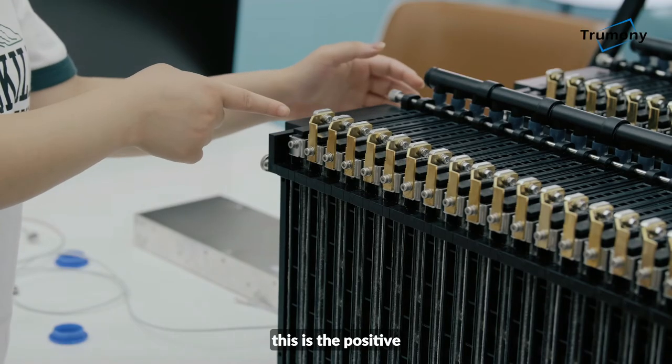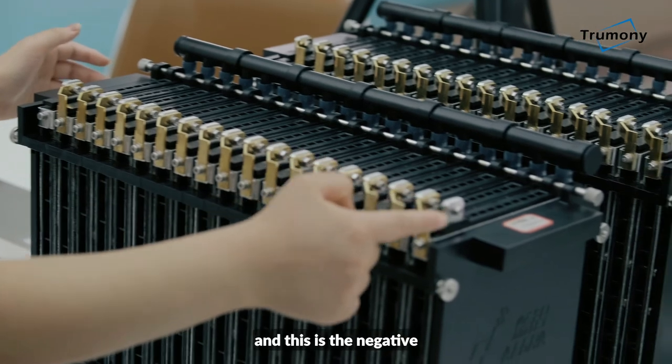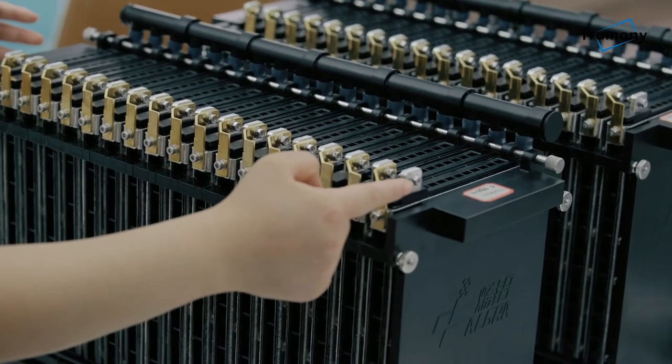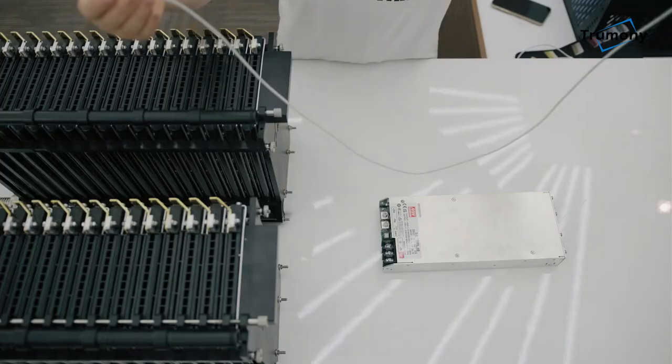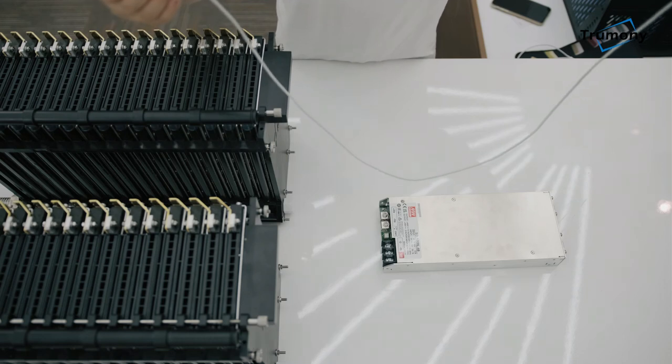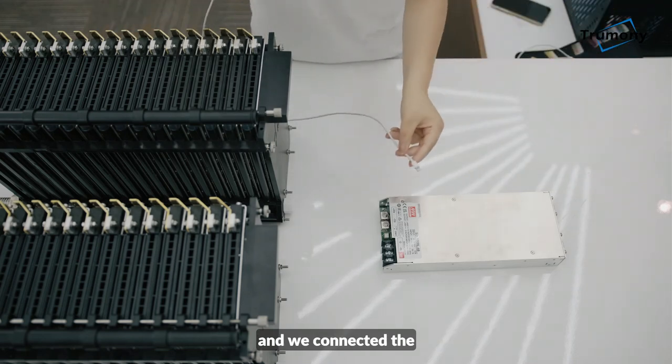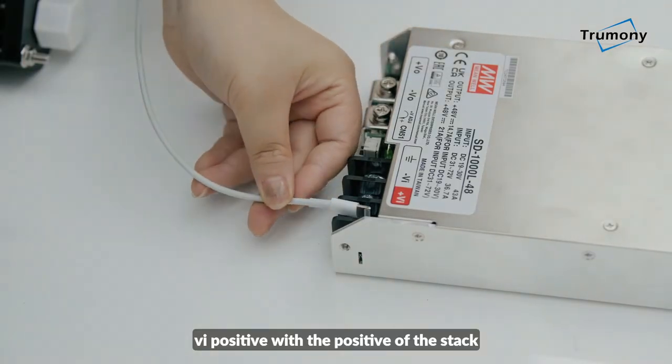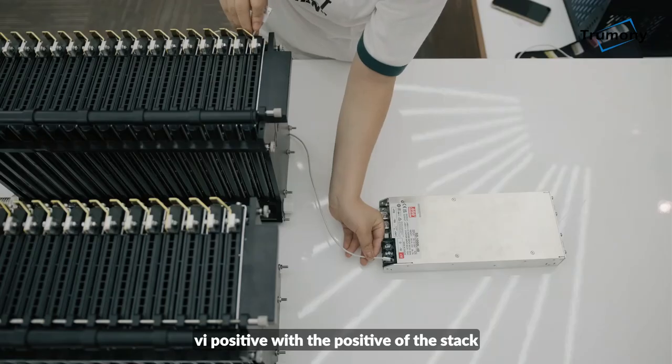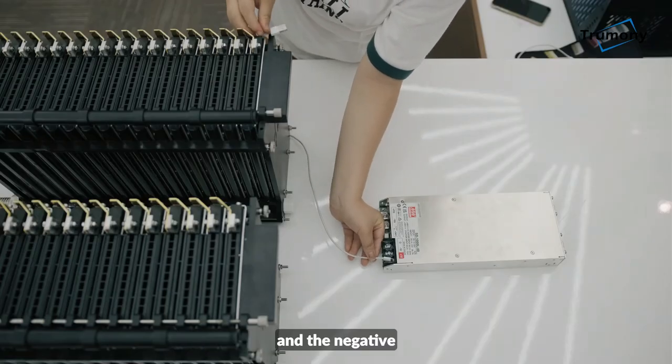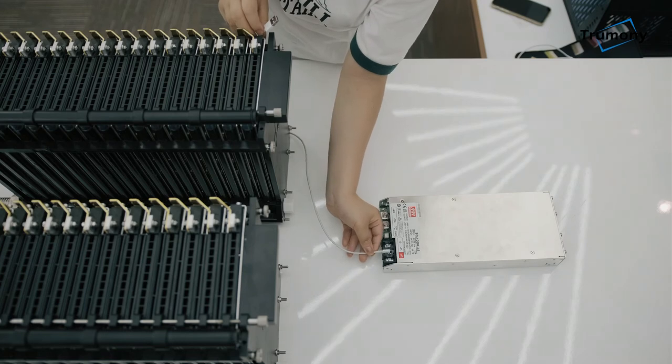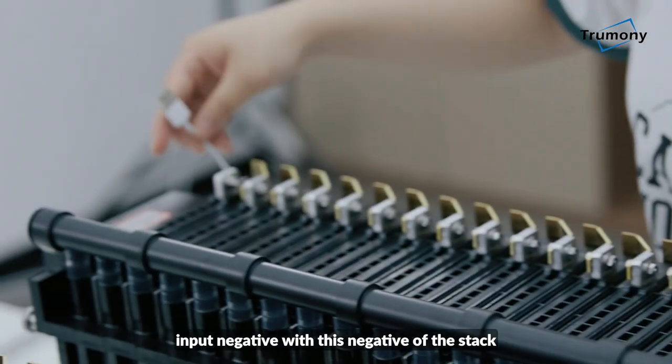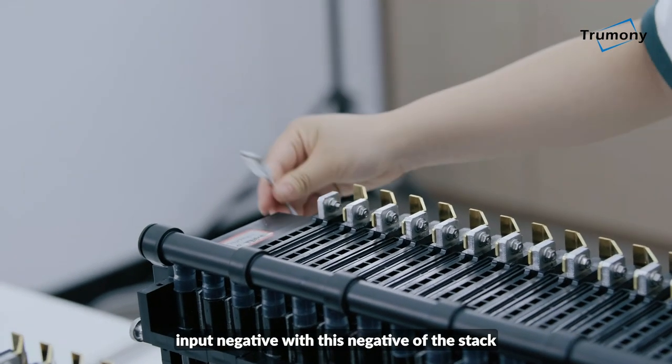This is the positive and this is the negative. Imagine this is the wire, and we connect the VI positive with the positive of the stack and the negative input negative with this negative of the stack.